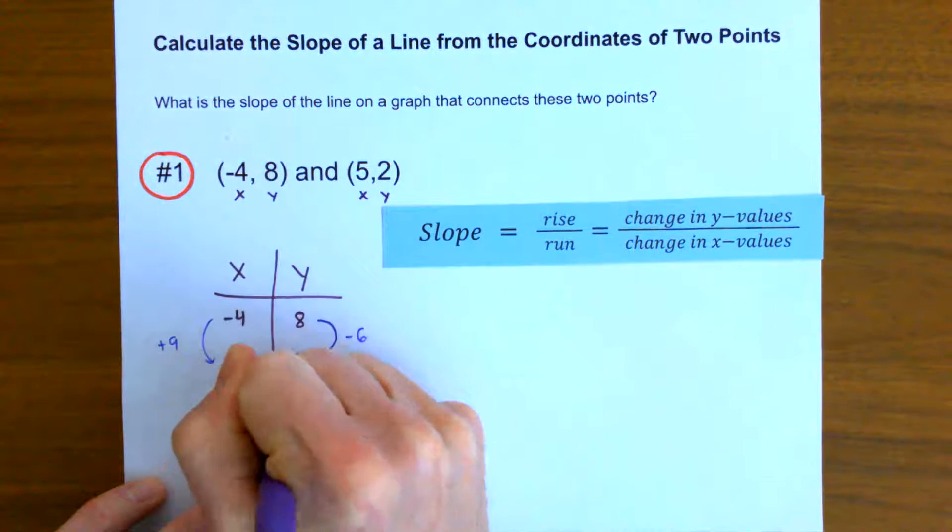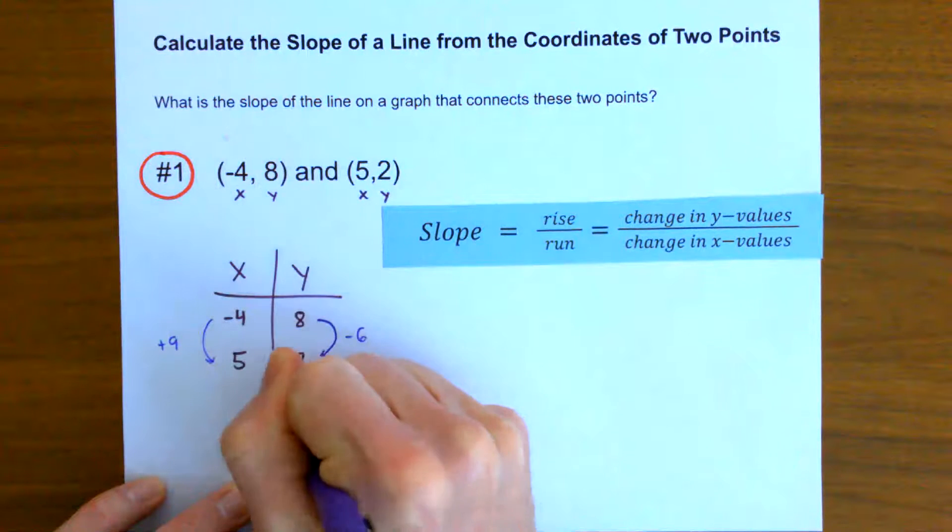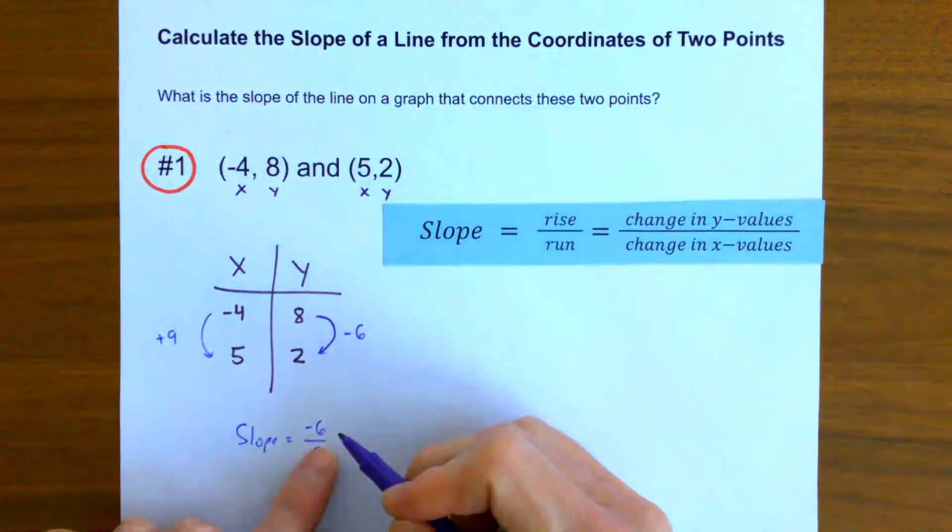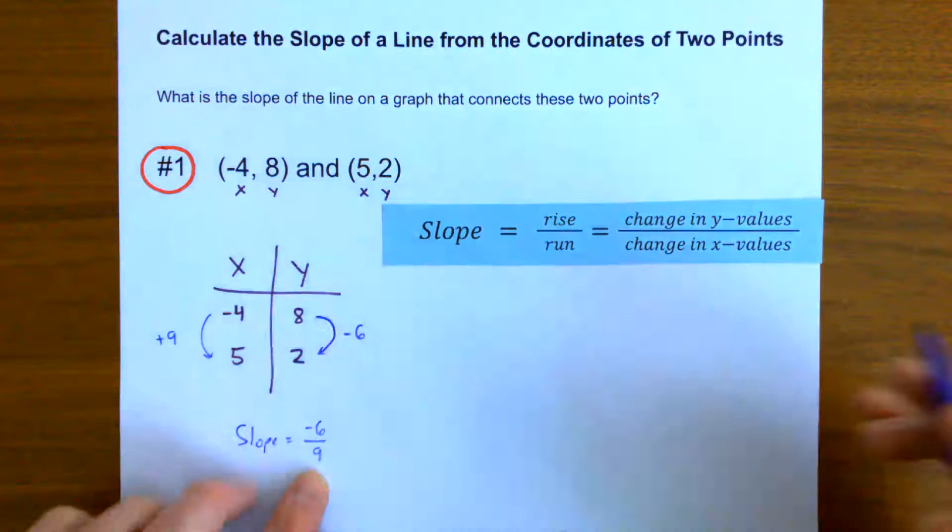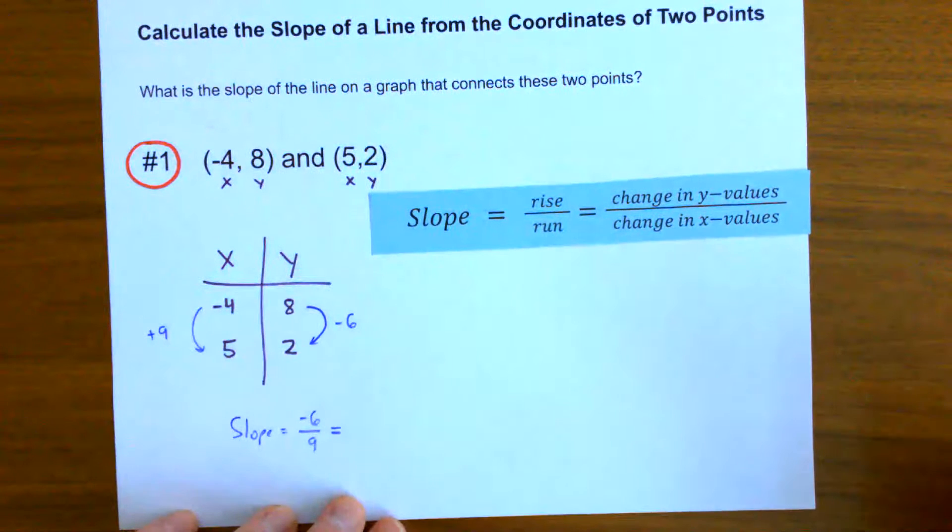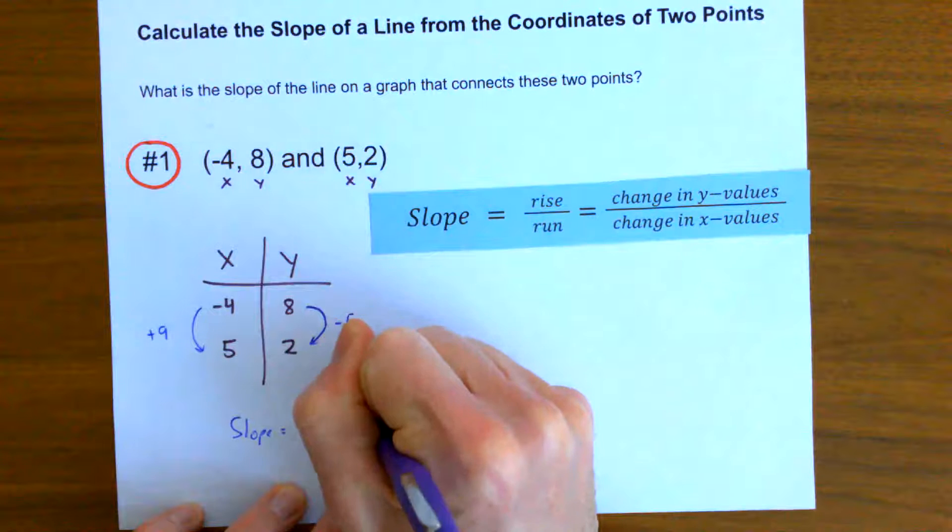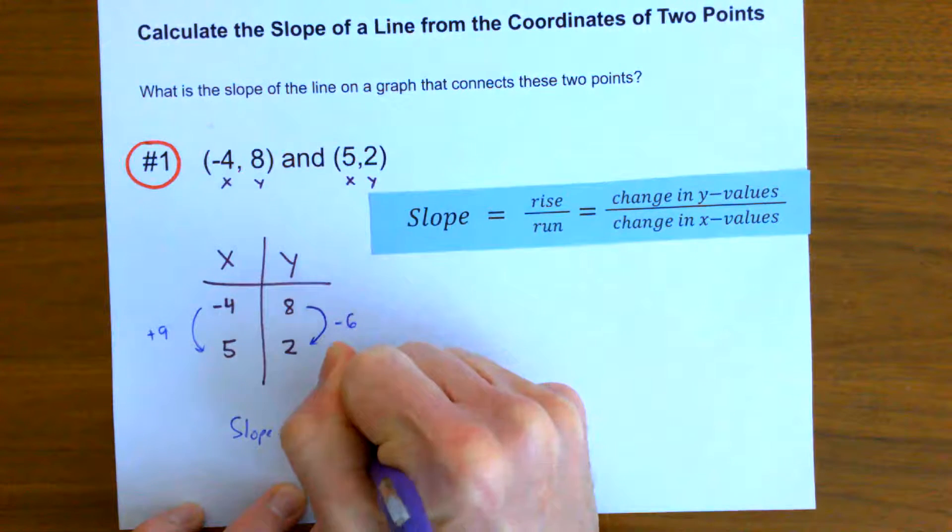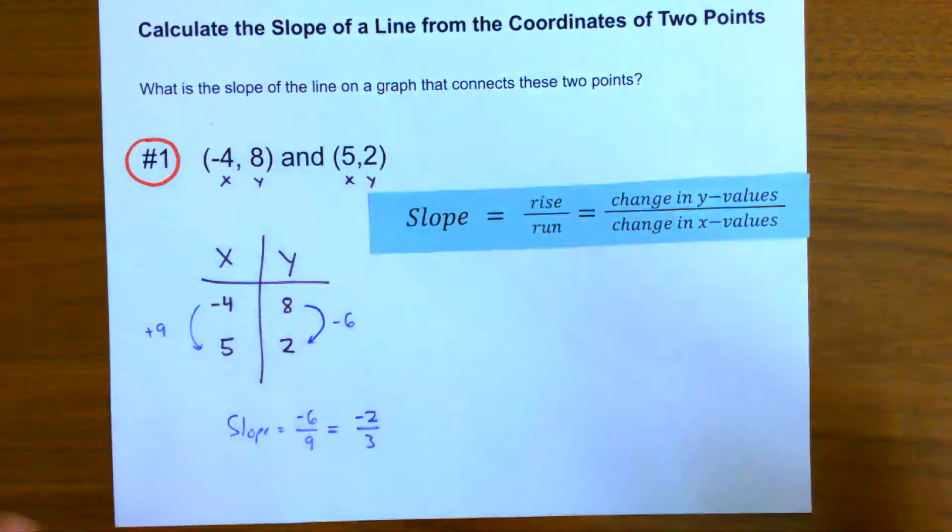So my rise over my run, or this slope, then is equal to negative six over nine. I lose six y values every time I gain nine x values. But I always want to reduce these slopes as well. Both of those are divisible by three, and so I end up with negative two over three. I lose two y values every time I gain three x values. So there is my slope.